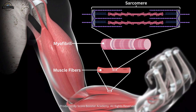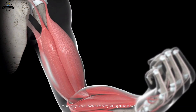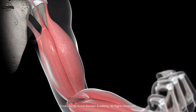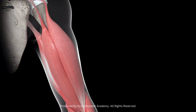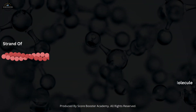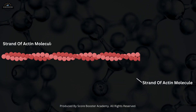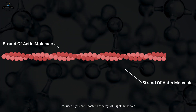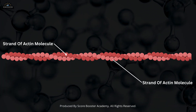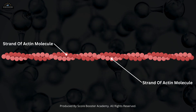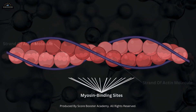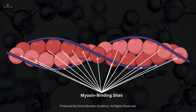The sarcomere is packed with two main types of protein filaments: actin and myosin. These filaments play a crucial role in the muscle contraction process. Actin filaments are thin, composed of two strands of actin molecules twisted into a helix. These filaments also have binding sites for myosin heads.